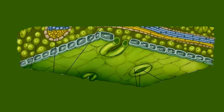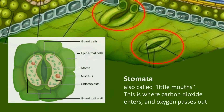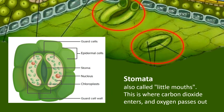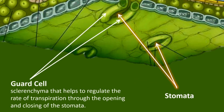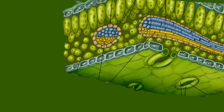On the lower epidermis you will see some openings — each opening is called the stomata. This is where carbon dioxide enters and oxygen passes out. Around the stomata is a pair of bean-shaped cells called guard cells. Guard cells are sclerenchyma that help regulate the rate of transpiration through the opening and closing of the stomata.